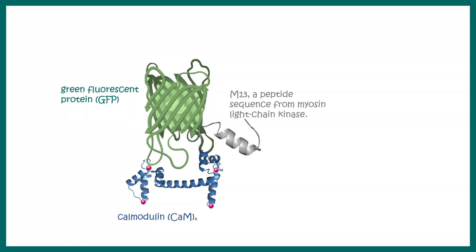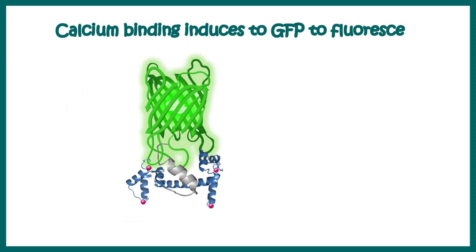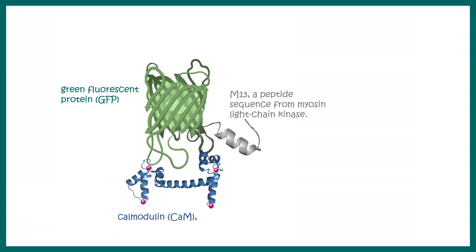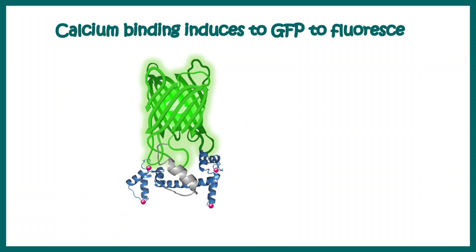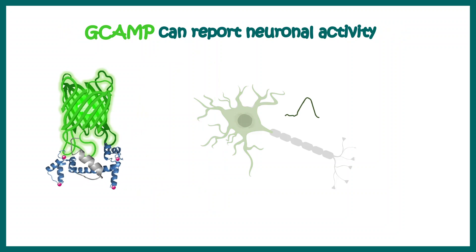In the calcium-unbound state, GCaMP does not fluoresce because the chromophore moieties are protonated. When calcium binds, there is a conformational change and fluorescence is now shown. Notice the M13 helix is now in a different location, and this results in the conformational change and fluorescing of the GFP molecule.